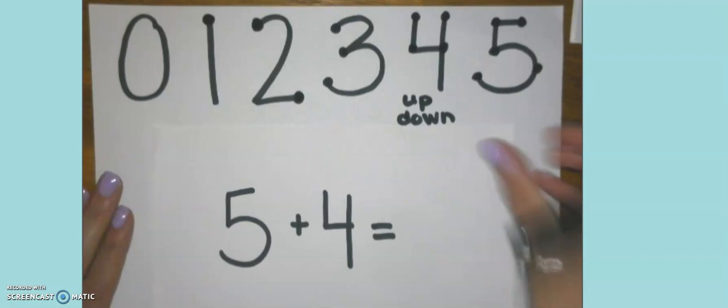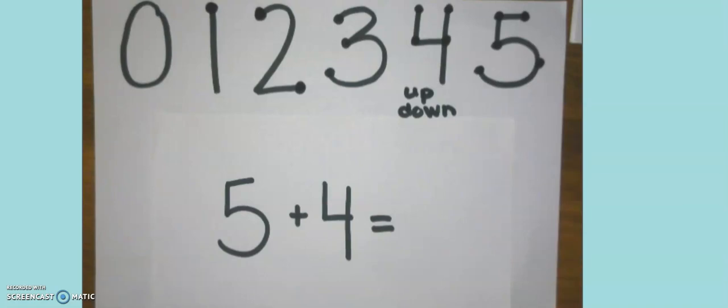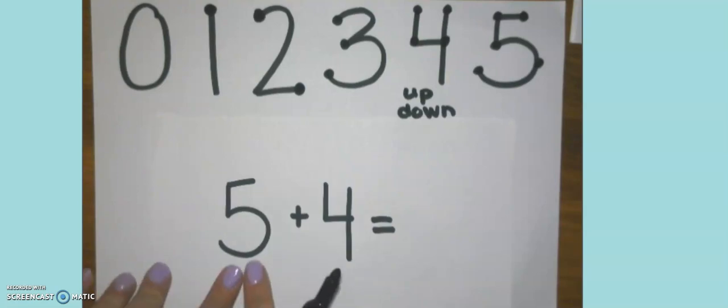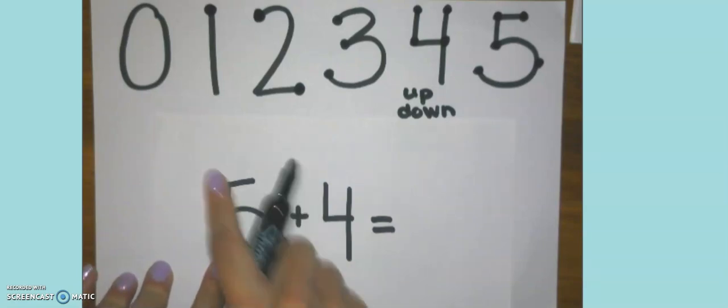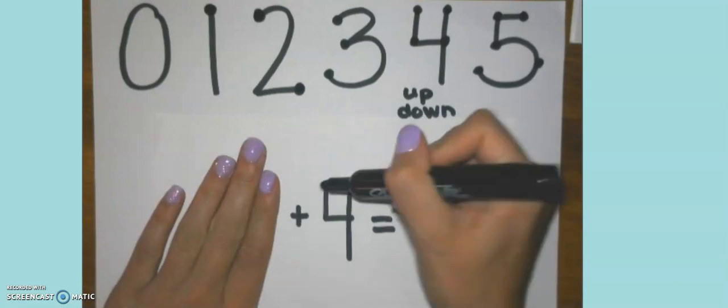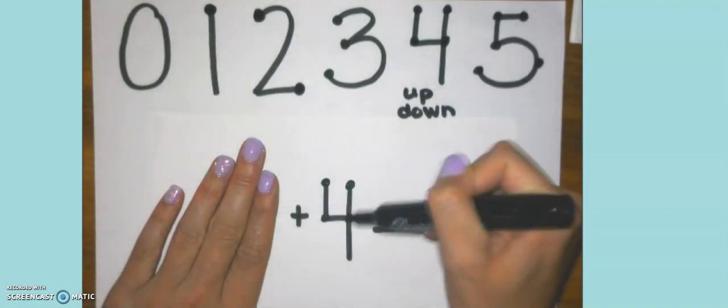Our first equation is five plus four. Now, some teachers might do this differently, but here is the way that I ask my students to do this. We look at both of the numbers and we ask ourselves, which number is larger, five or four? Five is larger. So we do not need to put touch points on number five. Let's put them on number four. One, two, three, four.